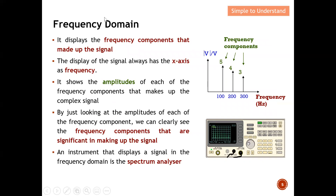Next, let's touch on frequency domain. In frequency domain, it displays the frequency components that make up the signal. For example, in this frequency domain display, we can see that this signal is made up of three frequency components: 100 Hz, 200 Hz, and 300 kHz. The amplitude is also shown here. You can see that 100 Hz is the main frequency component, followed by 200 Hz and 300 Hz. This shows which is the most significant component generating this signal.